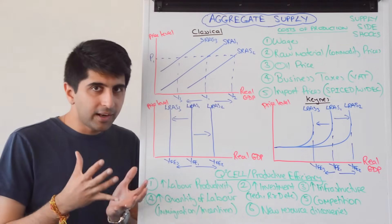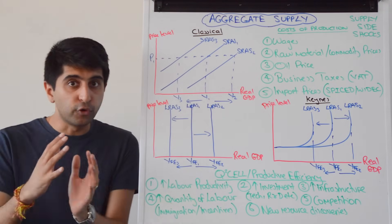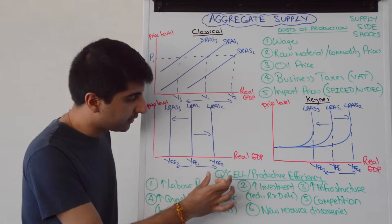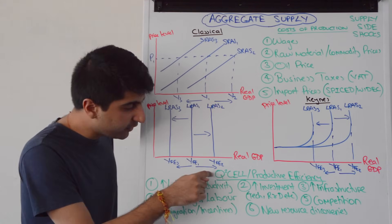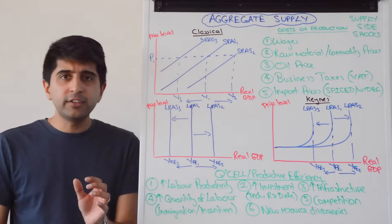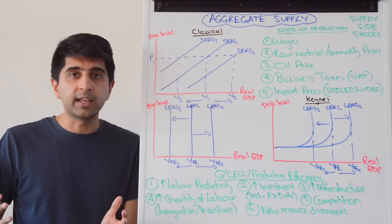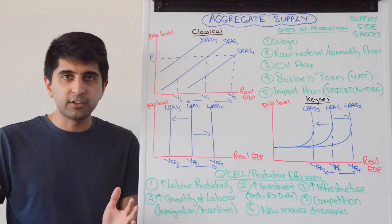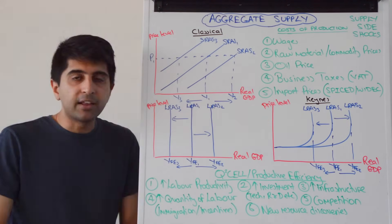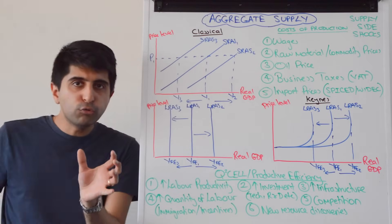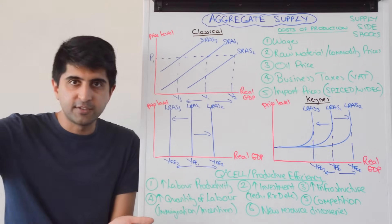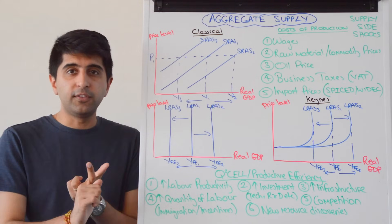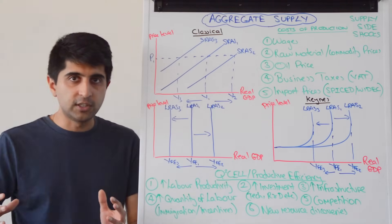How can the LRAS curve shift left or right? Simplify it with this memory device: the quantity and quality of our factors of production increasing and improving can shift LRAS to the right. Also, there might be an improvement in the productive efficiency of the economy — learn this as a fall in long-run costs of production. So three ways LRAS can shift right: an increase in the quantity of factors of production, an increase in the quality of factors of production, and an improvement in the productive efficiency of the economy. If that happens, LRAS shifts from LRAS1 to LRAS2, and the economy can produce more, from YFE1 to YFE2.